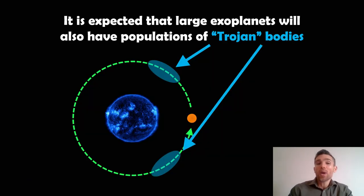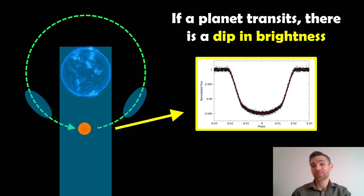So we expect that large exoplanets, so again, planets orbiting other stars, that they will have similar Trojan-like bodies in the L4, L5 Lagrange points. So we expect that to be a common thing for maybe Jupiter-like planets orbiting other stars. So they're there, but how do we actually detect them? Well, we can use the transit method.